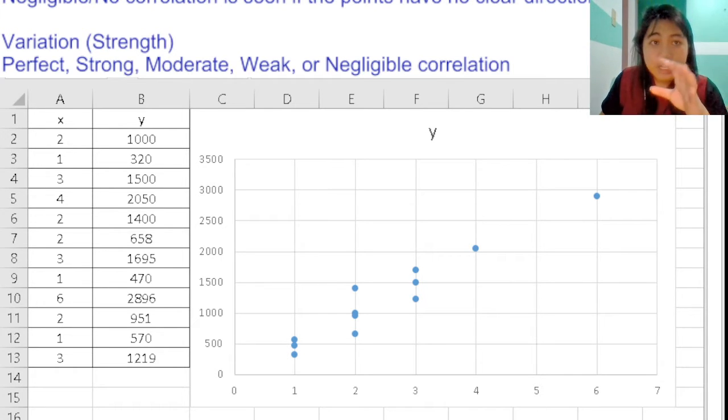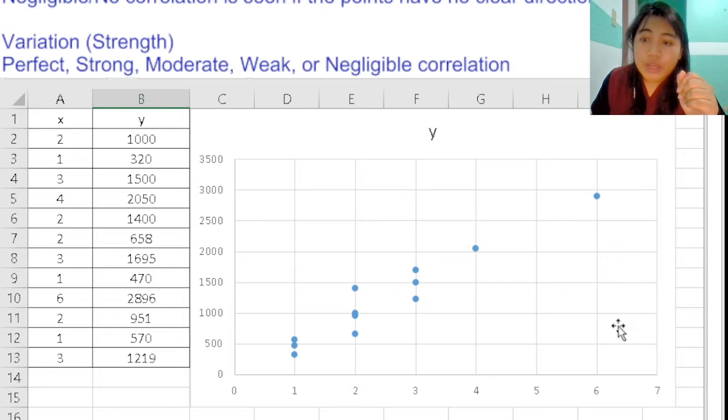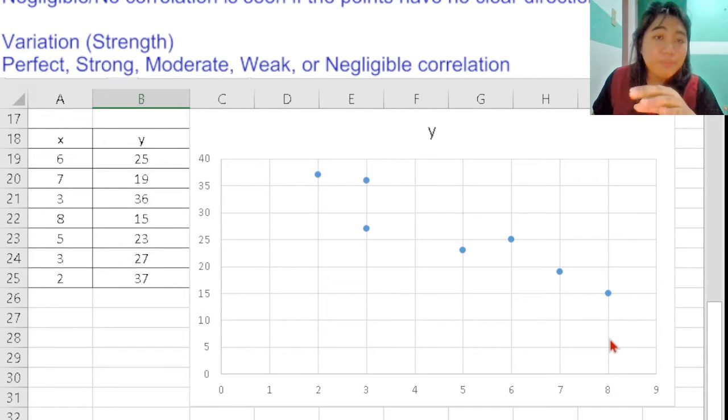In this example, it is not perfect but quite strong as the points are quite close to each other. As we look at the other example, you can see that the points are farther from each other, so we can consider this being moderate.